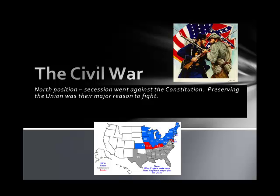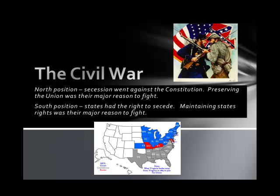The Northern position about the Civil War was that secession went against the Constitution. Their purpose for fighting was to preserve the Union and keep the country together. The Southern position was that the states had the right to secede. They used the Declaration of Independence to justify that decision and fought to maintain their states' rights.